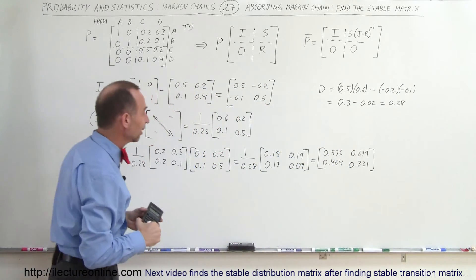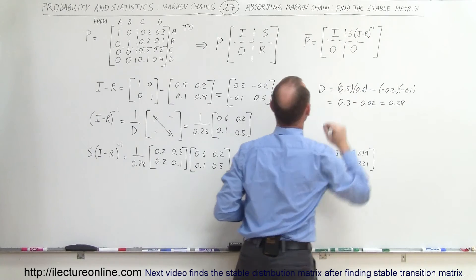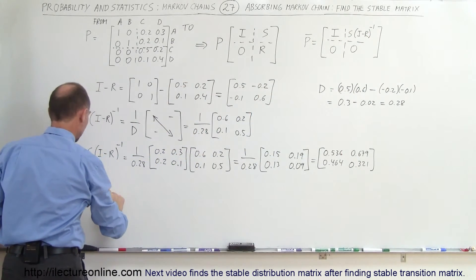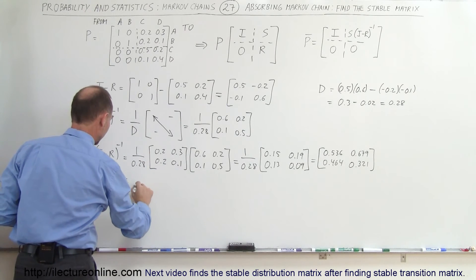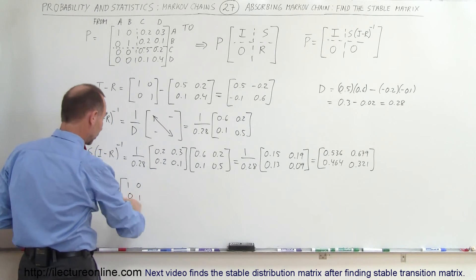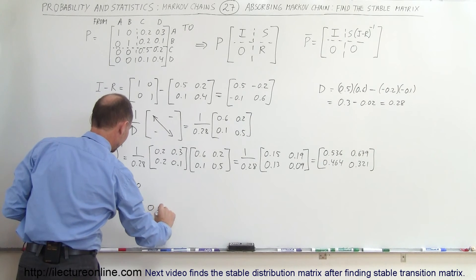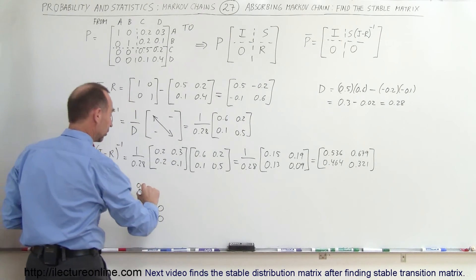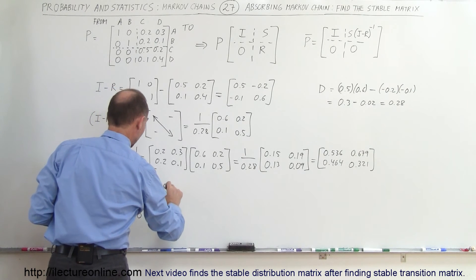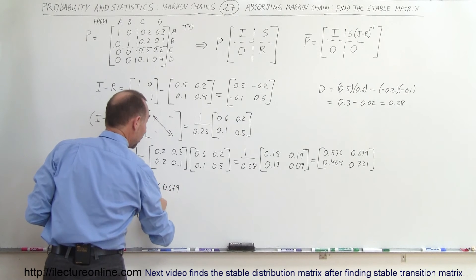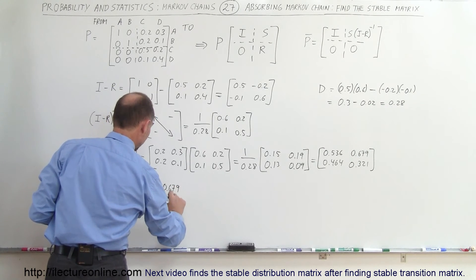This result will now go into the stable matrix in that corner. So the stable matrix can now be written as follows: in the upper left corner we have the identity matrix; in the lower left corner we have zeros; in the lower right corner we have zeros; and in the upper right corner we have 0.536, 0.679, 0.464, and 0.321.